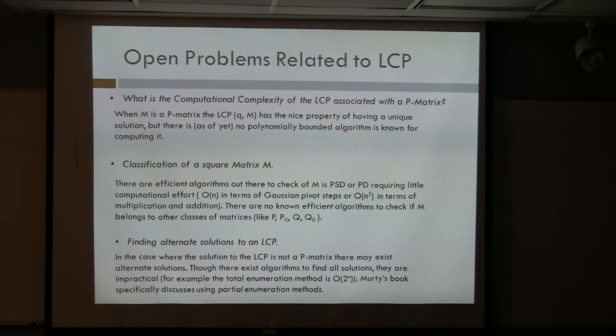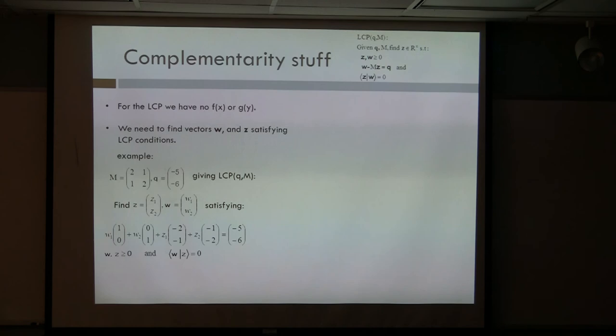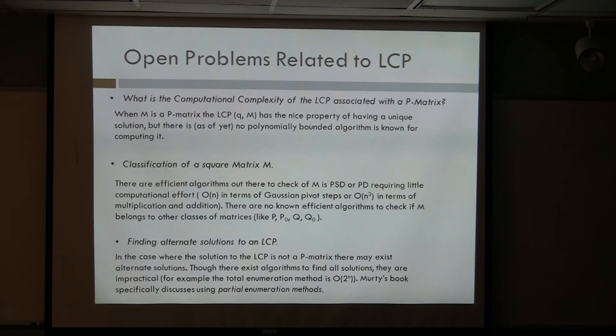So applications are everywhere. Now, some open problems related to the linear complementarity problem. What is the computational complexity of an LCP associated with a P matrix? A P matrix has all principal sub-determinants positive. As in our example with the 2-by-2 matrix with entries 2, 1, 1, 2, all principal sub-determinants are positive and it has a unique solution. Bizarrely enough, there is no efficient algorithm — no polynomial-bounded algorithm — for computing the solution when your matrix M is a P matrix. That's one open problem.